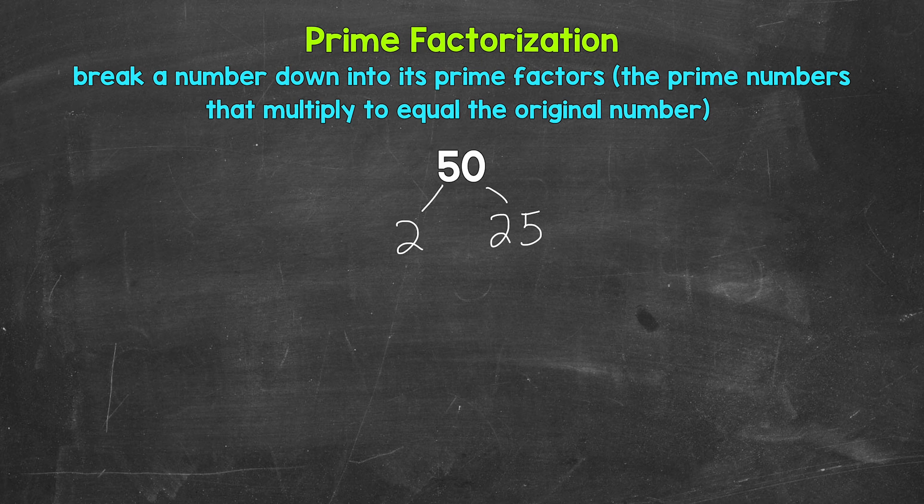Now, there are other factors that we could have started with here. For example, 5 and 10. 5 and 10 are factors of 50 as well. And yes, those other factors would work. Depending on the number, there can be multiple different factors that we can use. So there can be multiple ways to do these. But in the end, we will get the same prime numbers. And that's what's important.